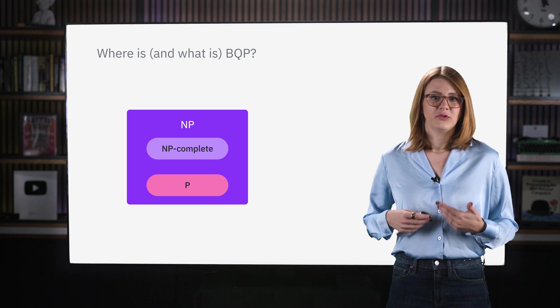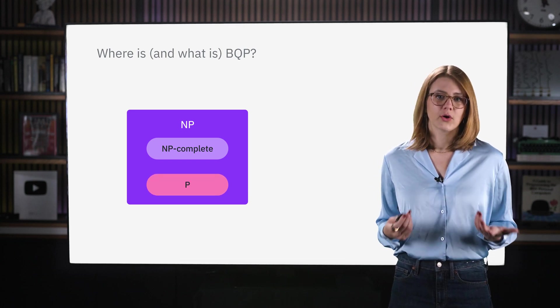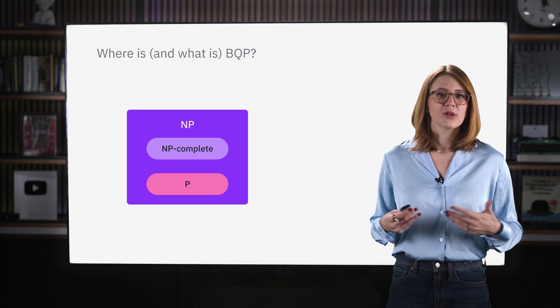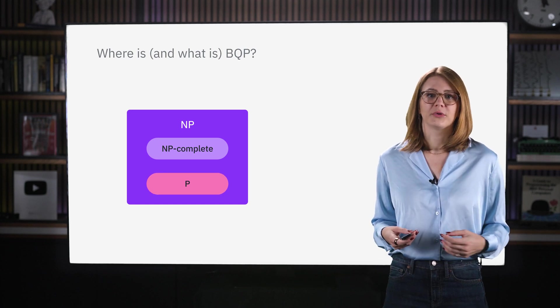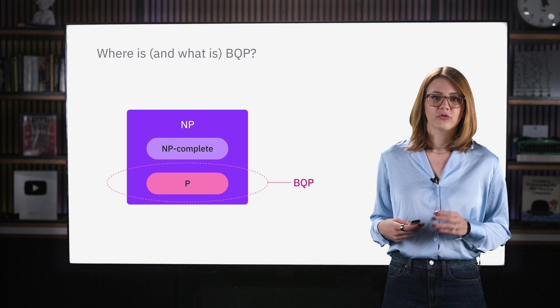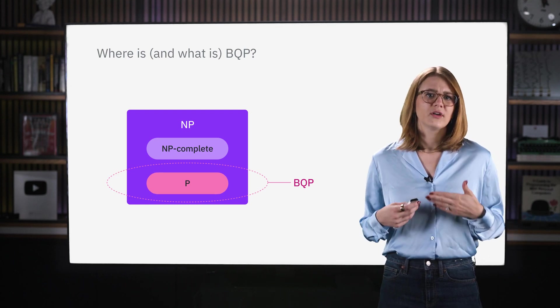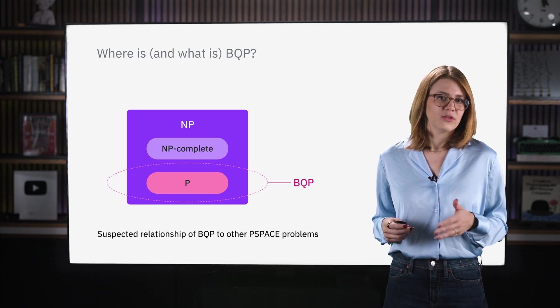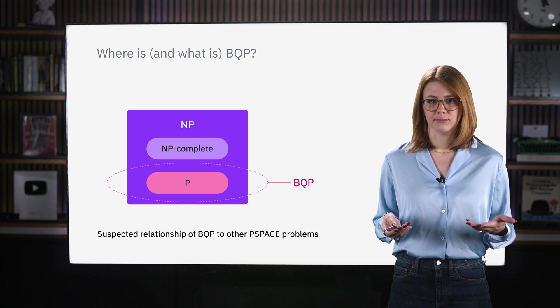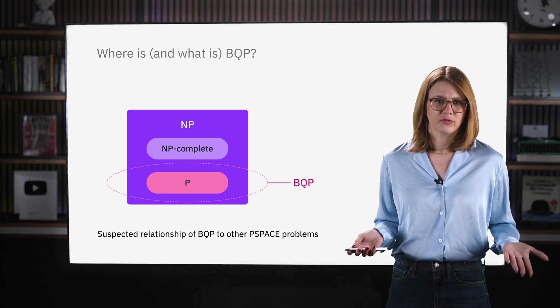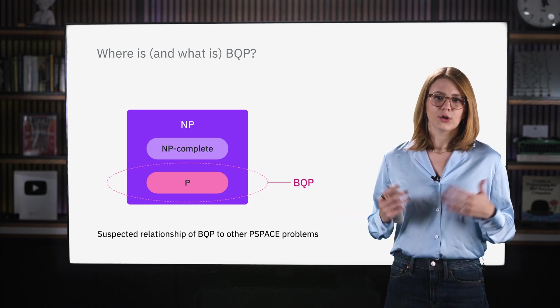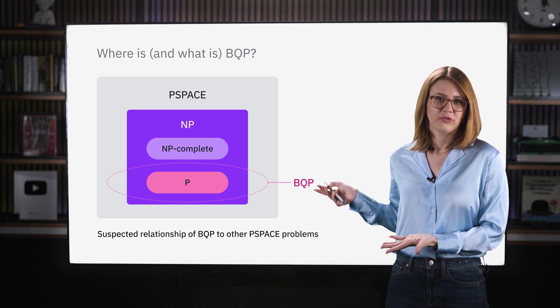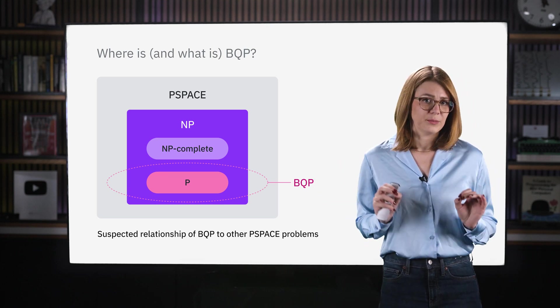Now when quantum computing came to be, at least in theory, people spent a considerable effort trying to figure out what class of problems these new types of computers would be able to solve efficiently. A new class of problems were invented called bounded error quantum polynomial problems, or BQP for short. Their strict definition is a little long, but it is the class of decision problems solvable by a quantum computer in polynomial time with a small chance of error. There's a chance of error because quantum measurement is inherently random, but the error probability can be arbitrarily small. Now all of these classes live in a larger class we call P-space. And this is where we think BQP lives relative to all of the other types of problems.